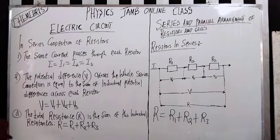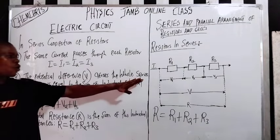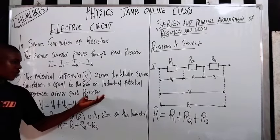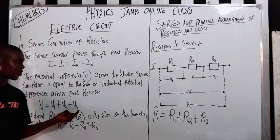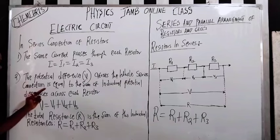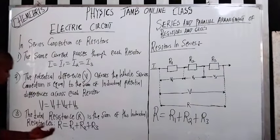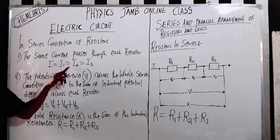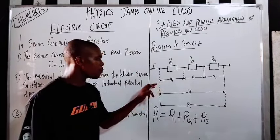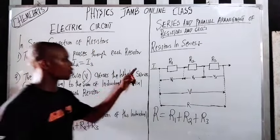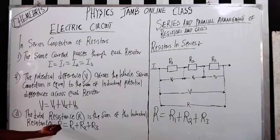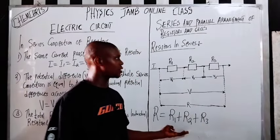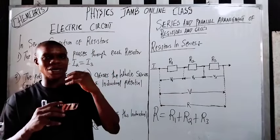The second property: the potential difference V across a series connection is equal to the sum of the individual potential differences across each resistor. It means that V equals V1 plus V2 plus V3. The current is the same — I equals I1 equals I2 equals I3 — but the voltages are not the same, so you have to sum them together. The third property: the total resistance is the sum of the individual resistances.